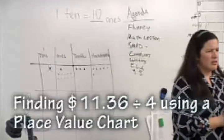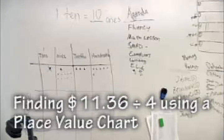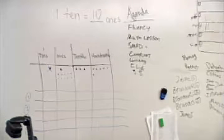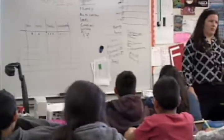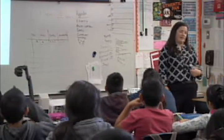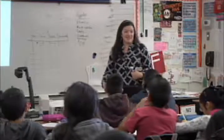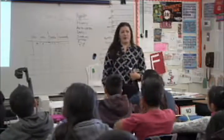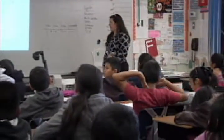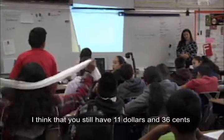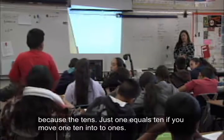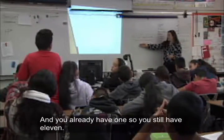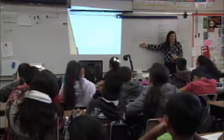The teacher asks: 'Do I still have $11.36 or did my number change?' Students are uncertain. The teacher presses: 'You're going to have to prove that to me because I'm so confused right now. Who's going to justify that for me?' Angel explains: 'In the tens, just one equals ten. You move one ten into the ones, and you already have one, so you still have 11. There's still 11 there.' Teacher: 'Mm-hmm.'